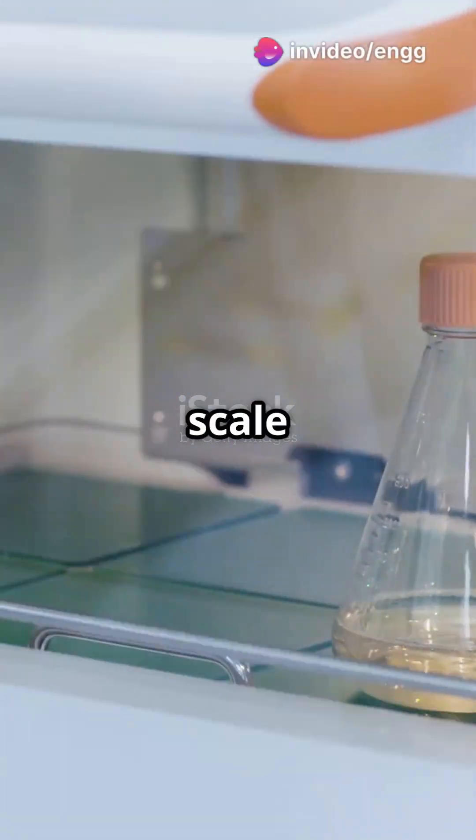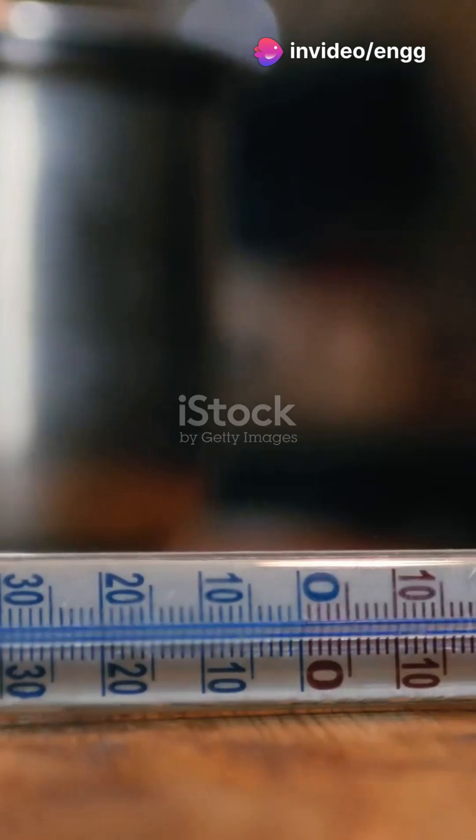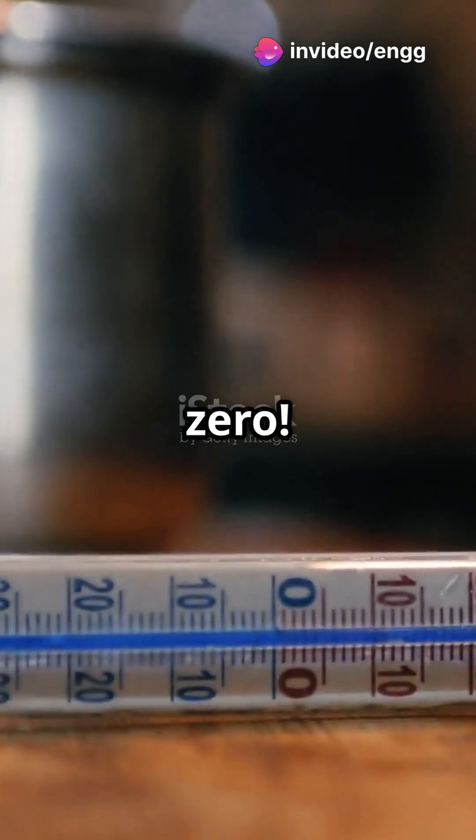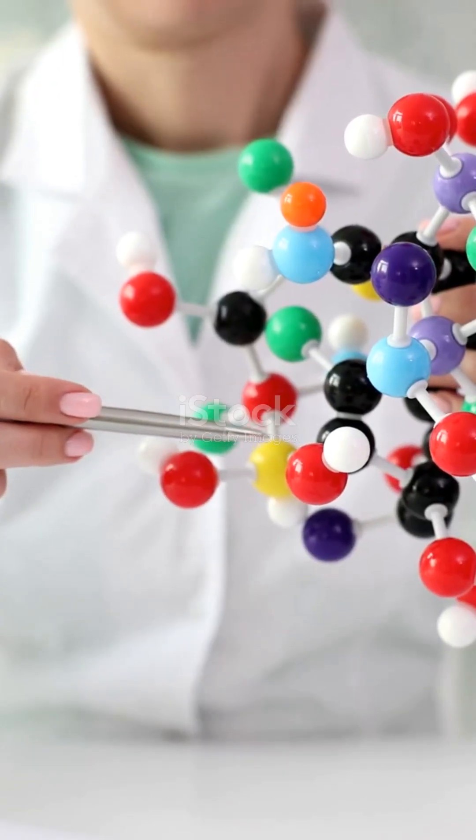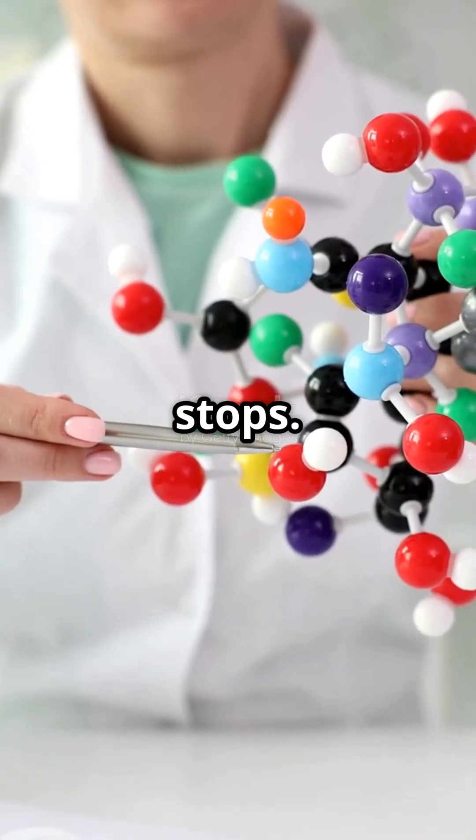Why do scientists rely on the Kelvin scale for the most precise measurements? It's all about the absolute zero. The Kelvin scale is unique because it starts from absolute zero, the coldest temperature imaginable where molecular motion stops.